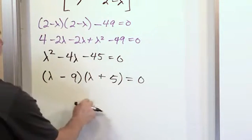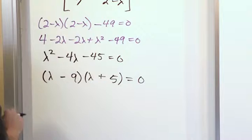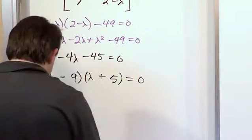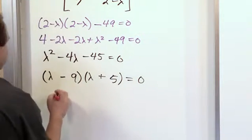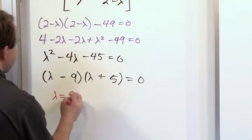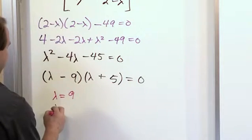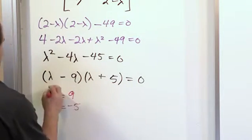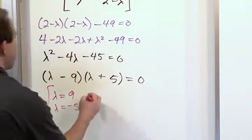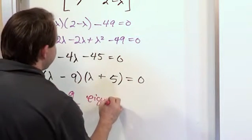That'll give me a negative 9 lambda. This will give me a positive 5 lambda. That's going to give me what I want in the middle. So basically I'm done. I can say that lambda is 9 when I set this equal to 0 and lambda is equal to negative 5. So 9 and negative 5. These are the two eigenvalues.